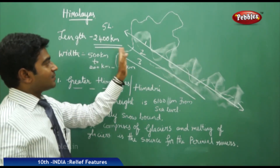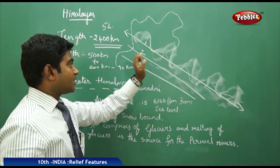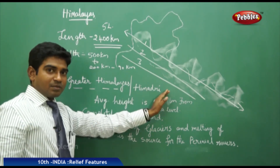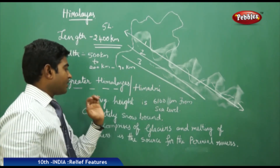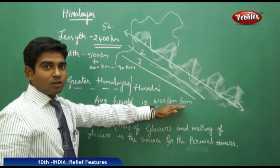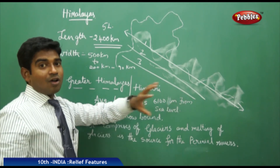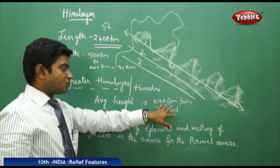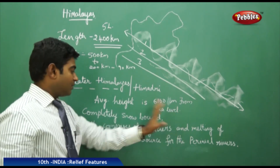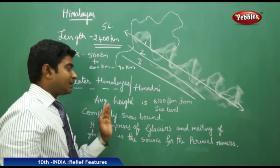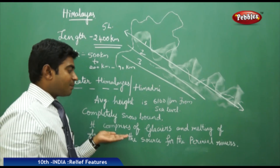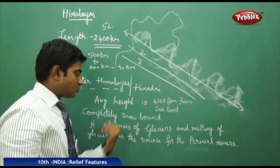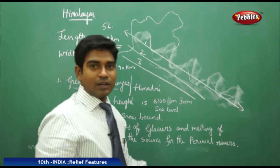The entire Himalayas are divided into three parts. The first is the Greater Himalayas, also known as the Himadri region, with an average height of 6,100 meters above sea level. All the world's highest peaks exist here. The region is completely snow-bounded and the melting of its glaciers is the source of the perennial rivers.